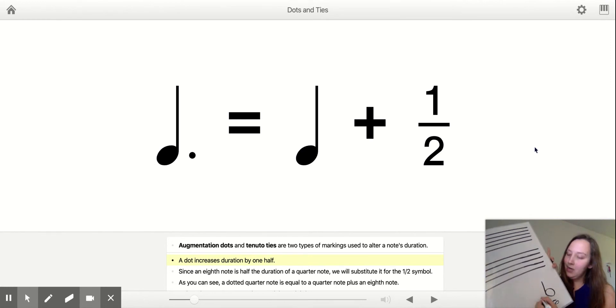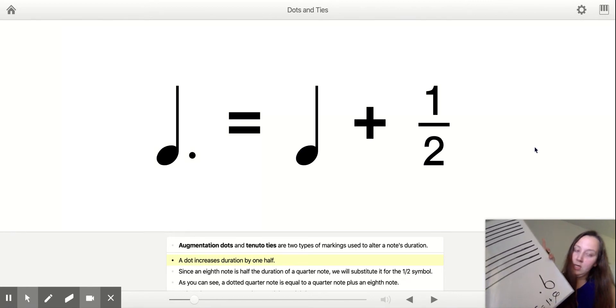If I add a dot to it, the dot equals half of whatever this note is. So in this case half of 2 would be 1, so 2 plus 1 would equal 3.